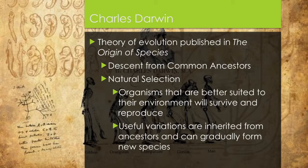Here is Darwin. He published the theory of evolution in The Origin of Species. He proposed descent from common ancestors and natural selection. Natural selection basically states that an organism better suited to its environment will survive and reproduce, and that useful variations are inherited. Any variations in the genes that allow an organism to survive and reproduce better than its competition will pass those beneficial traits to offspring and could possibly create a new species.